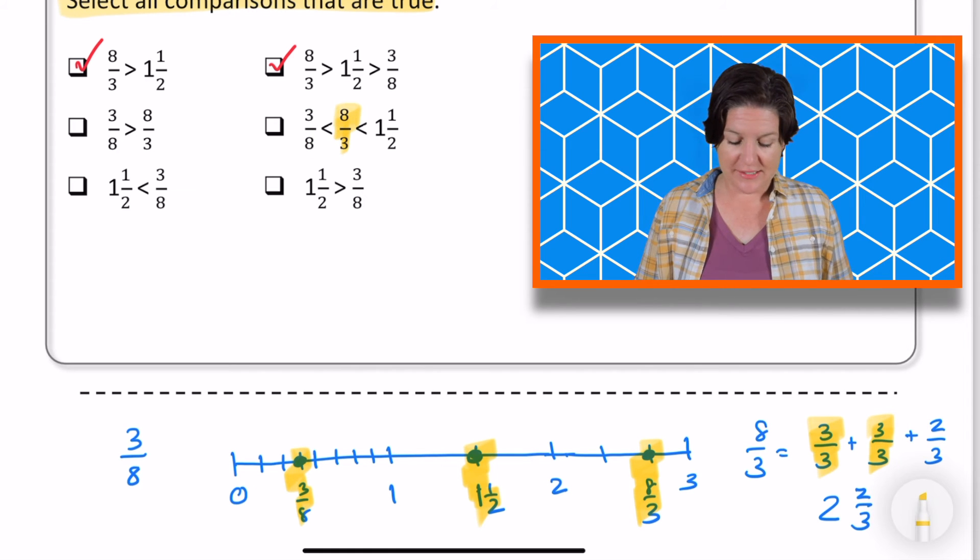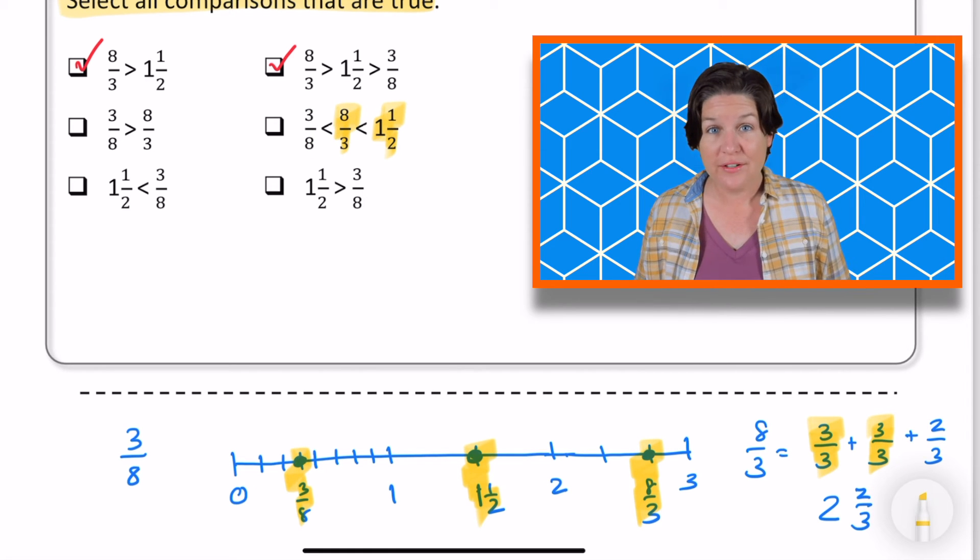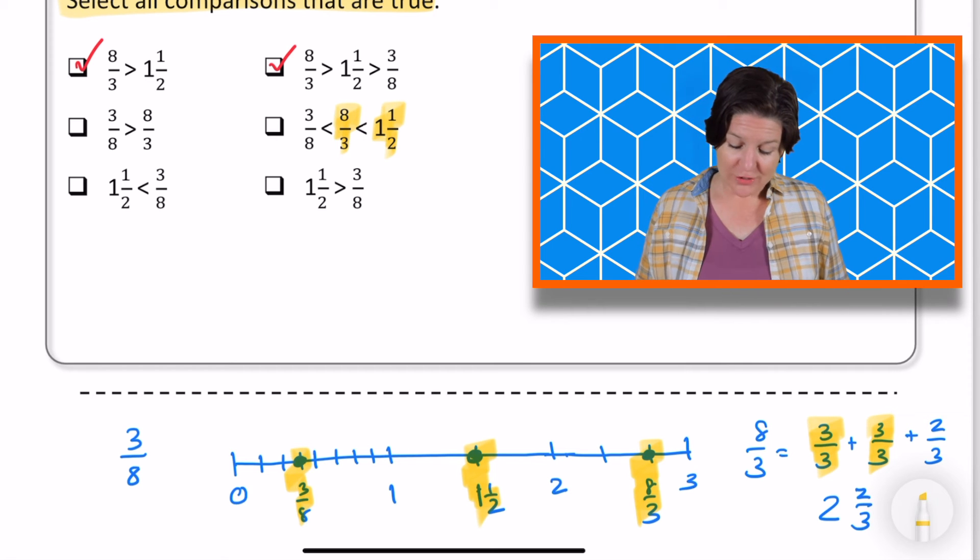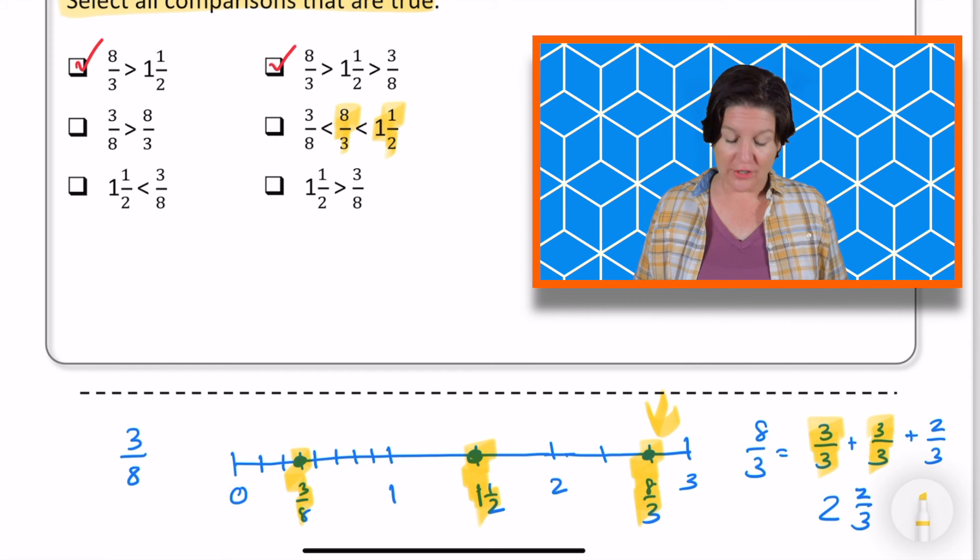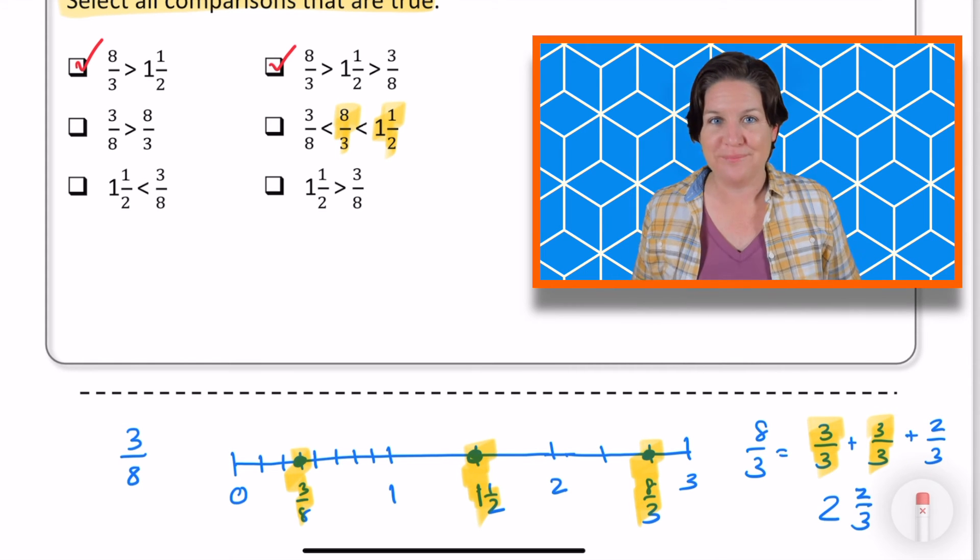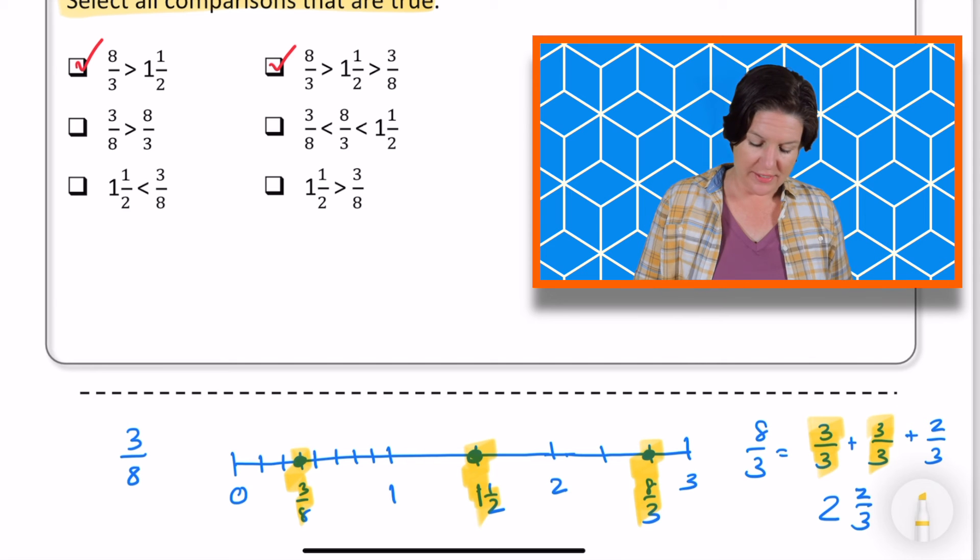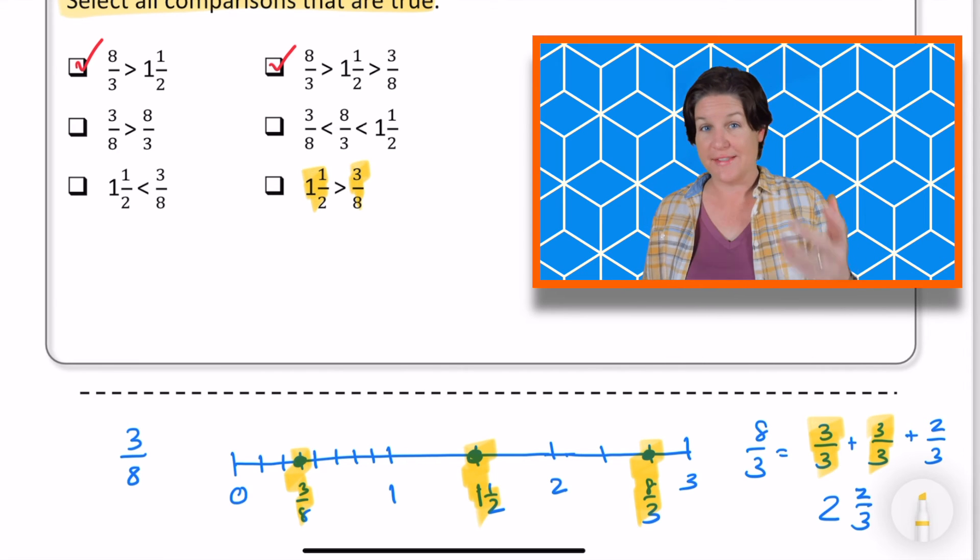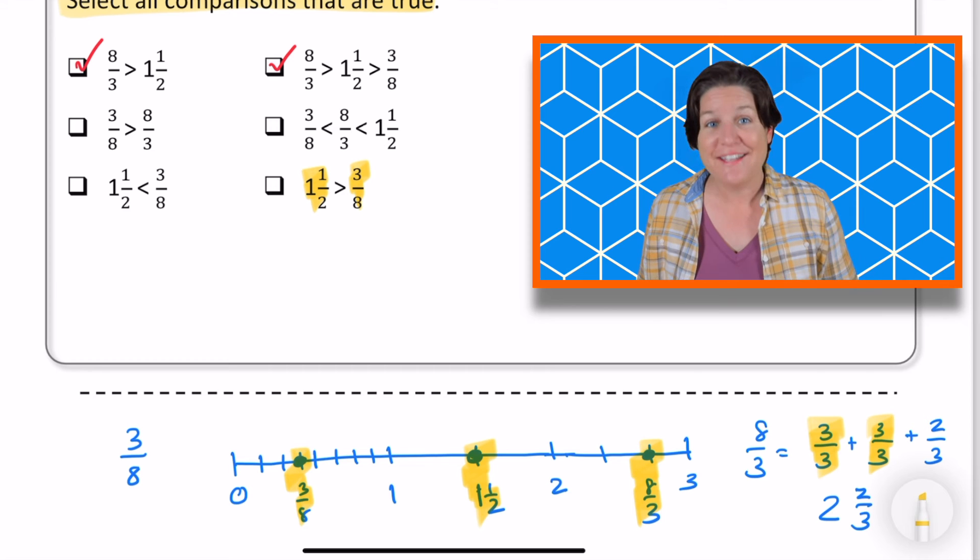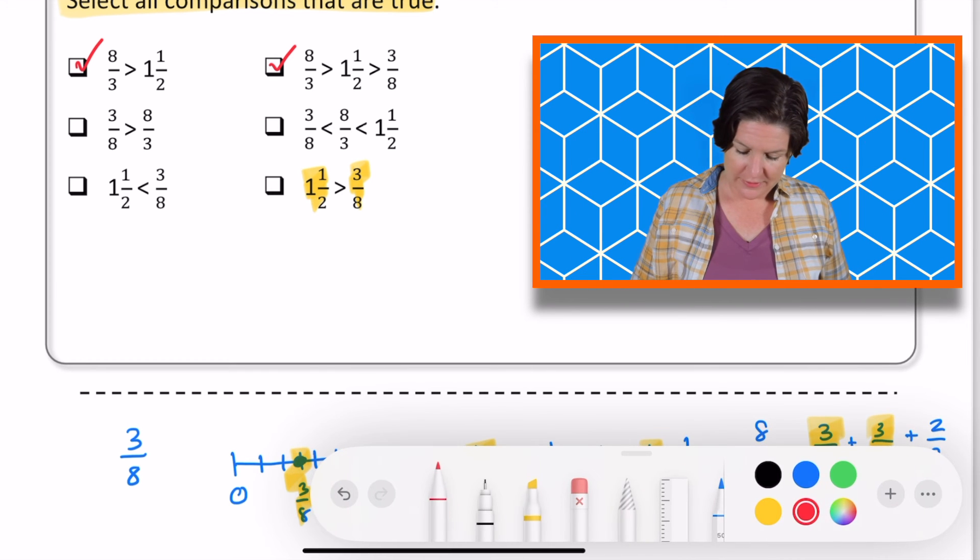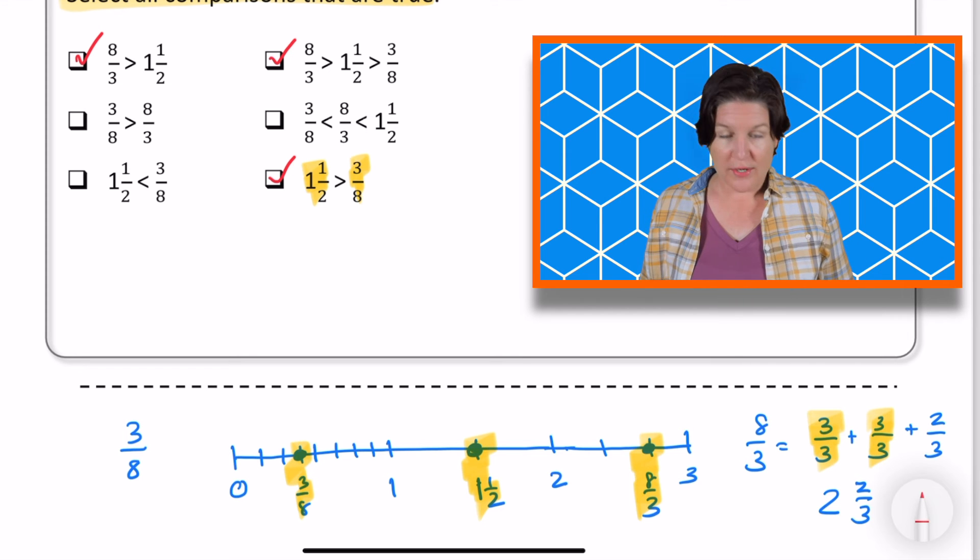All right. Now is eight thirds less than one and a half. Is that true? No, that one is not true because eight thirds over here is greater than one and a half, not less than. So we can go ahead and eliminate that one. All right. And our final one says that one and a half is greater than three eighths. Is that true? It is true. So we can go ahead and keep that one. Let's mark it. So we've got three answer choices for this one.